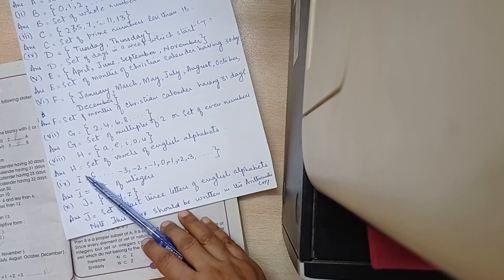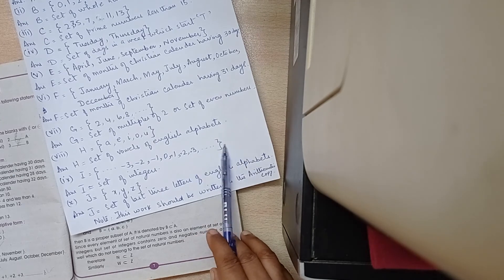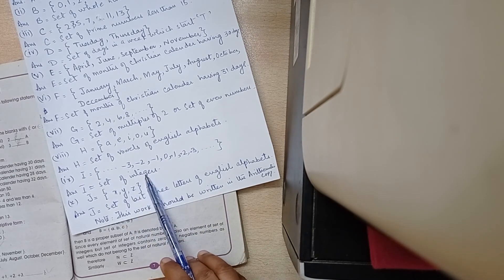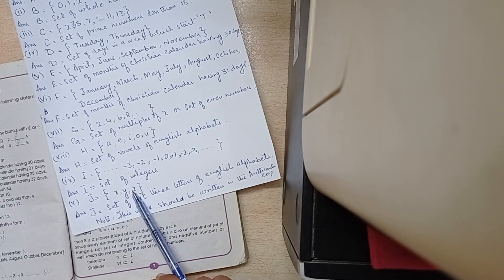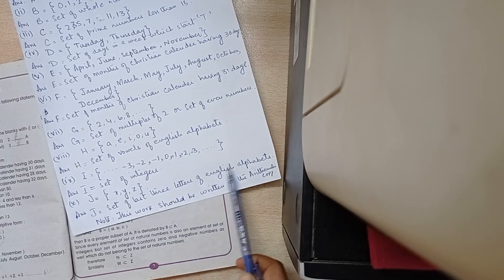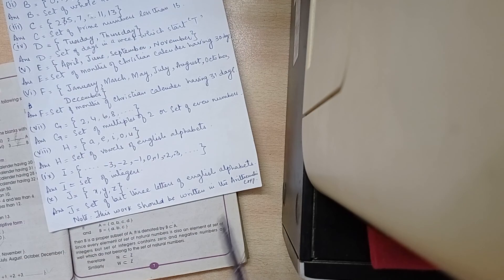And I is equal to... and so on. Set of integers. J is equal to X, Y, Z. Set of last 3 letters of English alphabets. Is it clear? This work should be written in the arithmetic copy.